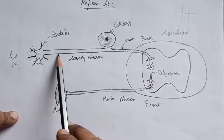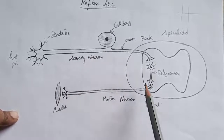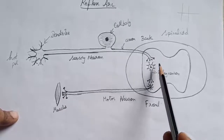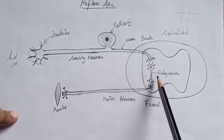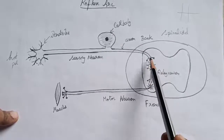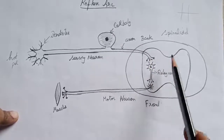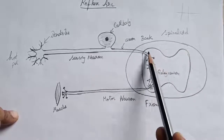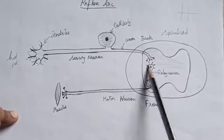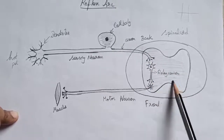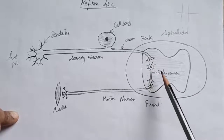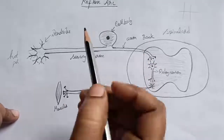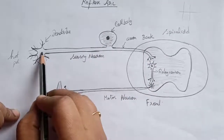The neuron that detects the signals is called the sensory neuron. The neuron that responds to the stimulus is called the motor neuron. The neuron that communicates between the sensory and the motor neuron is called the relay neuron, which is present inside the spinal cord. The spinal cord has white matter and gray matter; the relay neurons are present in the gray matter.